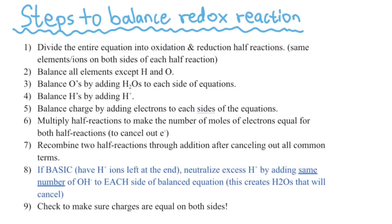First, I want to tell you guys the steps that you should follow to balance redox reactions, and we will go ahead and apply these steps later on in two examples of acidic and basic. So first, you have to divide the entire chemical equation into two half-reactions. You do that by oxidation and reduction. Oxidation means that you are losing electrons, and reduction means that you are gaining electrons. And don't worry, we'll go over this in the example as well.